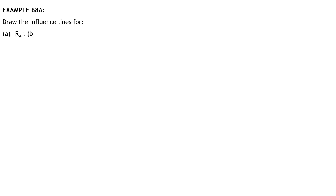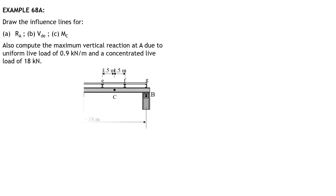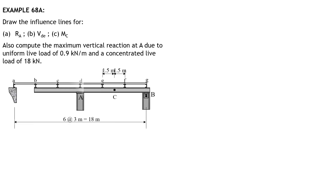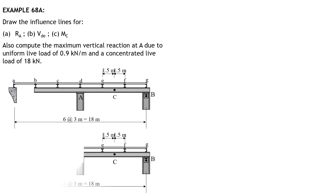Draw the influence lines for RA, shear in panel point DE, and moment at C. Also compute the maximum vertical reaction at A due to a uniform live load of 0.9 kilonewtons per meter and a concentrated live load of 18 kilonewtons. So here we go.